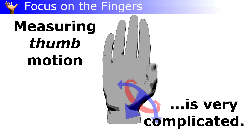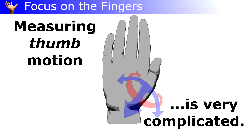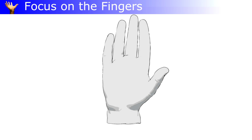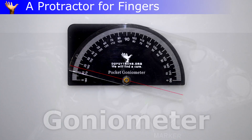The thumb has its own measurement issues. It moves in two perpendicular directions and also rotates. The cords are the problem, but very hard to measure, even with MRI.